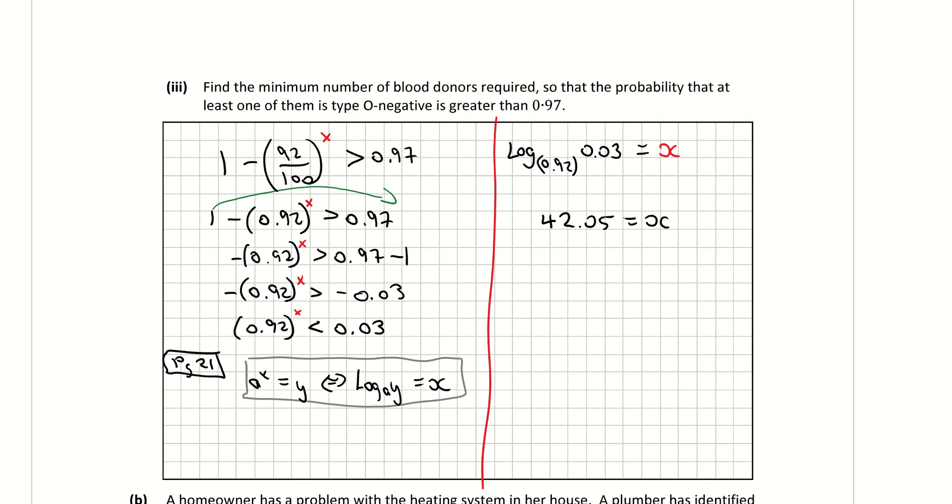Now the question wants us to find what's the minimum number of blood donors. Just be careful, your answer there is not 42. Your answer is 43 donors. Because 42, if I subbed in 42 as my power there, I would get a value which is less than 0.97. 43 is the nearest whole number that gives me a value greater than 0.97. Obviously we can't have a decimal as a donor number. That's why we have to round it up. So logic there tells us it's 43, not the mathematics to tell us it's 42.